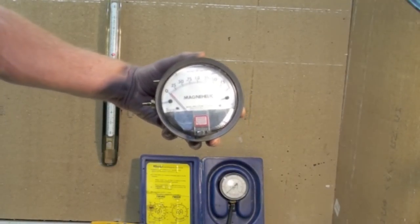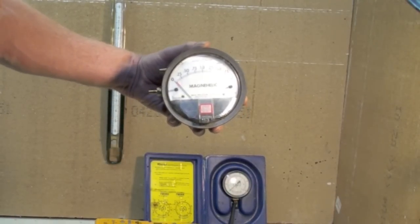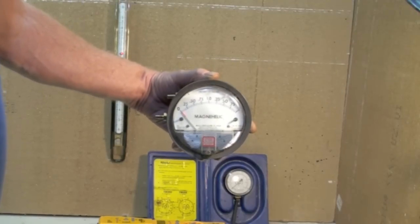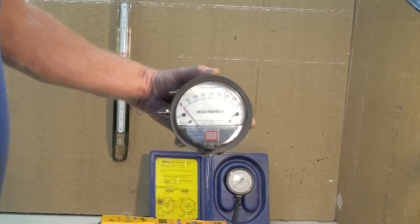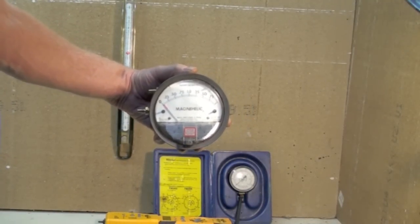We're going to be reading low fire on a gas furnace so this one will still be within its range. Most gas furnaces run about three and a half inches of water column. This would not work for that but on first stage it will.